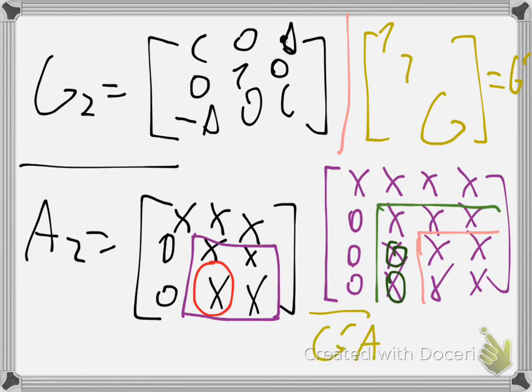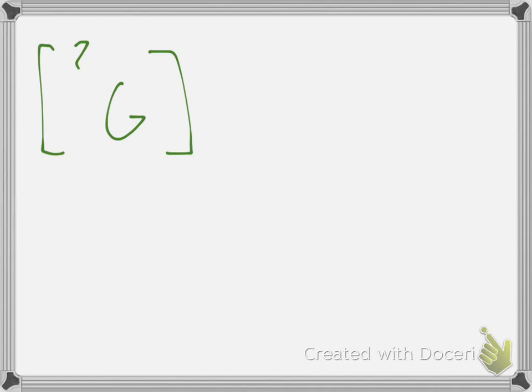If you only consider the sub-matrix, our Givens Rotation will not be in the same dimensions as A. For example, if you only consider the green sub-matrix, our Givens Rotation will be in three dimensions, but A is in four dimensions. In that case, you just add a one in the upper-left corner and place your Givens Rotation in the remaining block, so the rotation is in three-plus-one dimensions with zeros elsewhere.